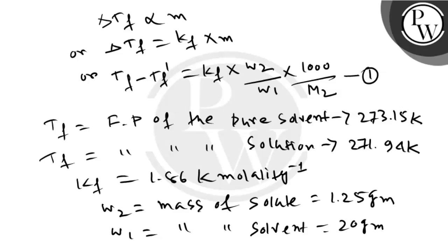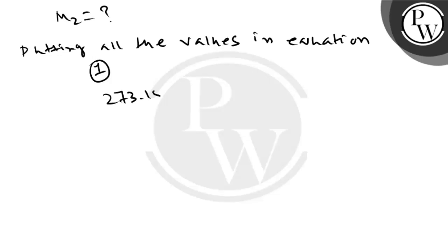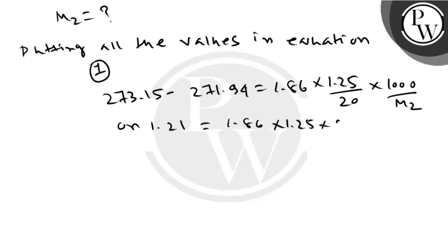Now, we have to calculate M2. Putting all the values in equation 1, we have 273.15 minus 271.94 is equal to 1.86 into 1.25 by 20 into 1000 by M2, or 1.21 is equal to 1.86 into 1.25 into 50 by M2. Therefore, M2 is equal to 1.86 into 1.25 into 50 by 1.21.